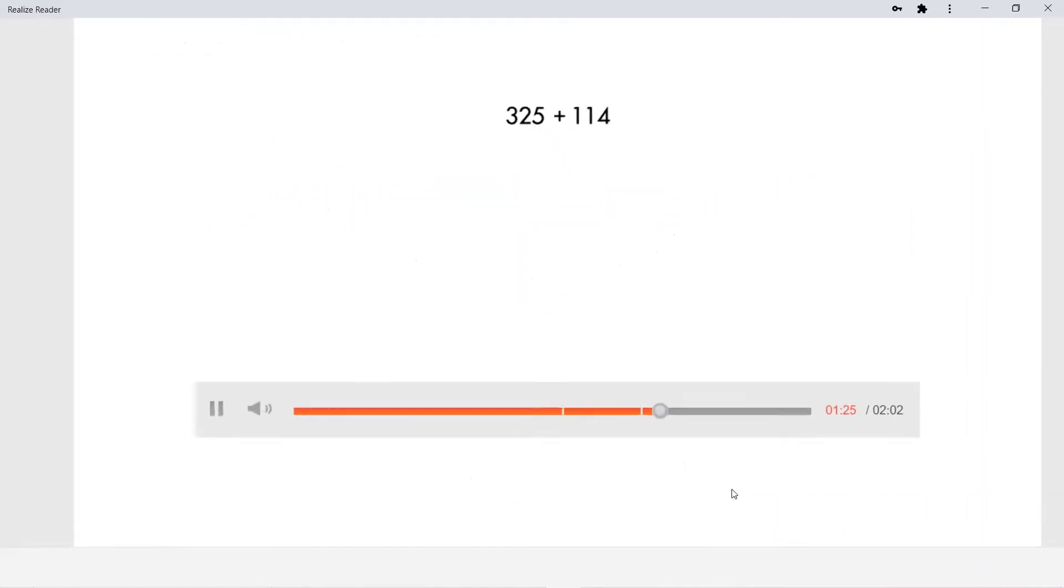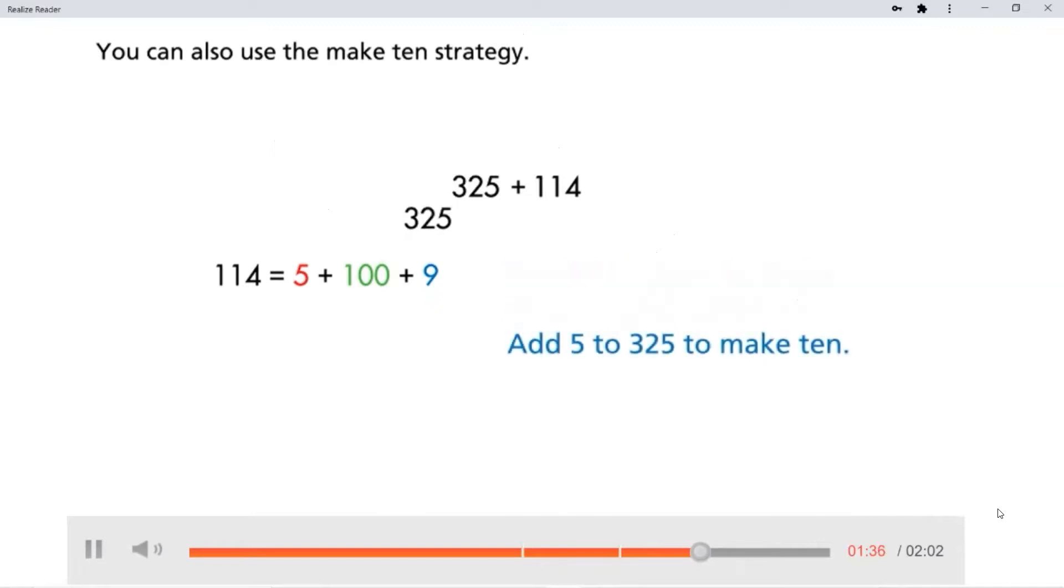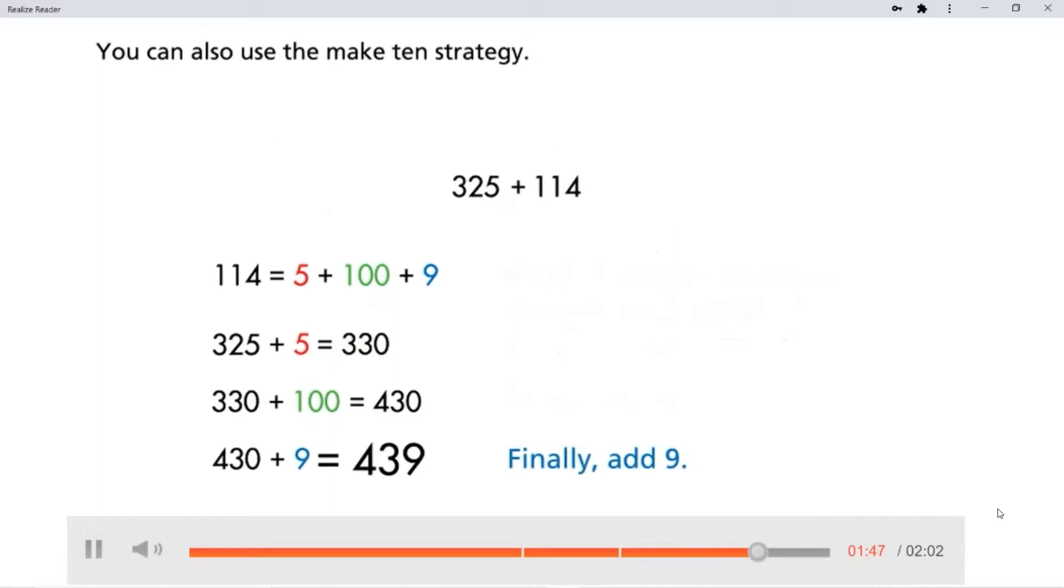You can also use the Make 10 strategy. Break 114 apart to find a number that makes a 10 when added to 325. Add 5 to 325 to make 10. Then add 100. Finally, add 9.